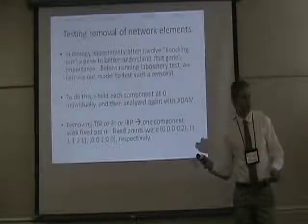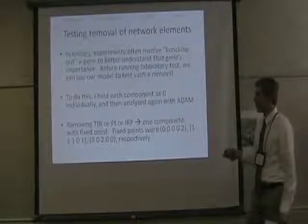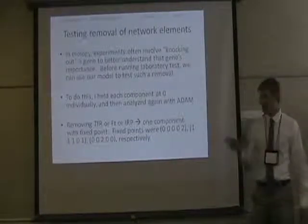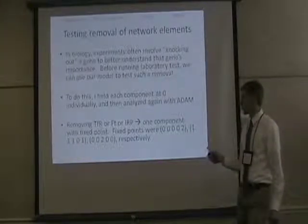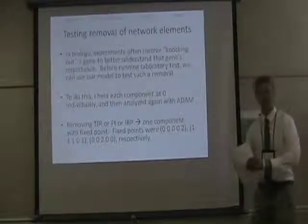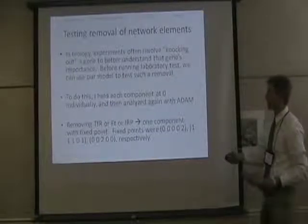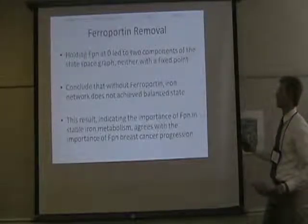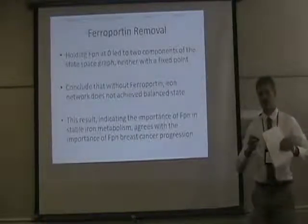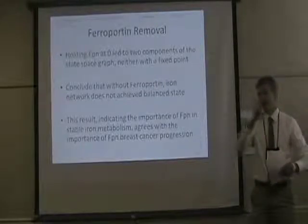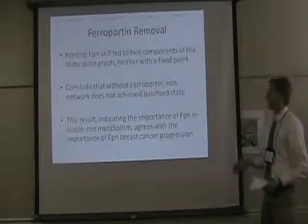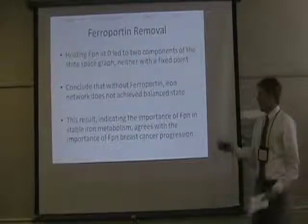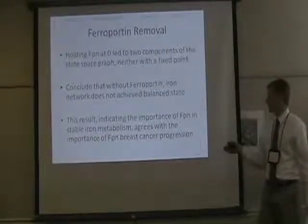In a lab, a gene knockout takes about two days and is an expensive procedure, but we can test it in our model. I held each component at zero and analyzed the network in ADAM. Removing ferritin, transferrin, or ferritin each gave one component with a fixed point — the model still tended to one steady state. But when we removed ferroportin, we got interesting results: the state space split into two separate pieces, neither tending toward a steady state. Both ended up in cycles where iron wasn't steady, indicating that without ferroportin the iron network isn't stable — agreeing with the importance of ferroportin in breast cancer progression.